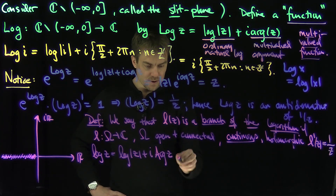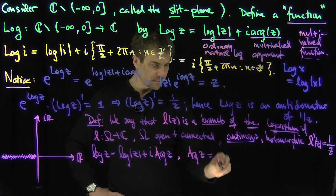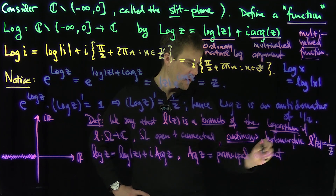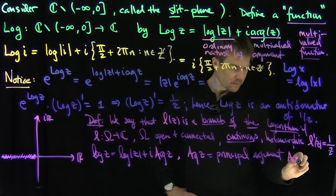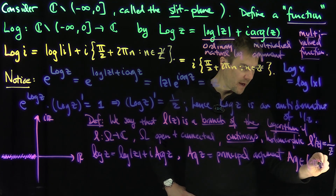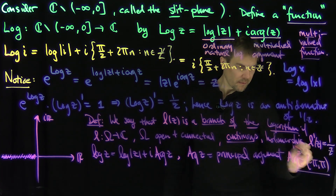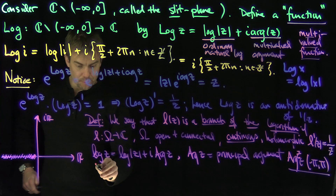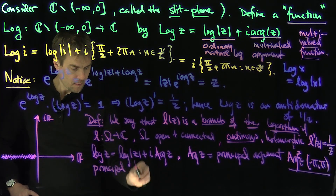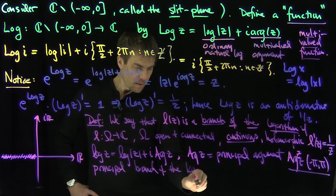The principal argument Arg(z) is always between negative pi and pi. This is called the principal branch of the logarithm.